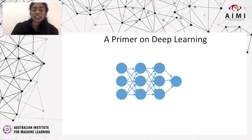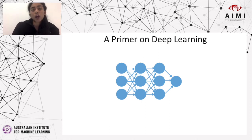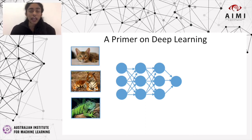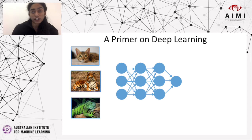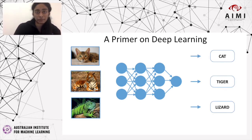Deep learning is a computational methodology that uses a series of neuron layers, which essentially model mathematical functions, to extract insights from raw inputs, such as images or audio. When a deep learning model is trained on a large database of animal images, the neurons learn the underlying characteristics of the images and can then perform predictive tasks, such as correctly classifying the image.